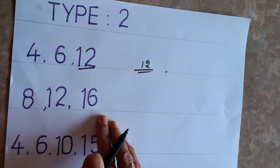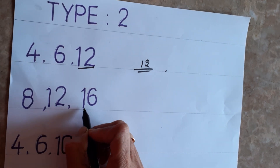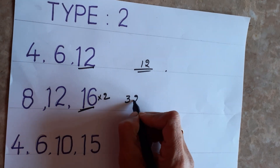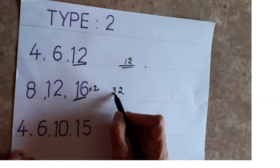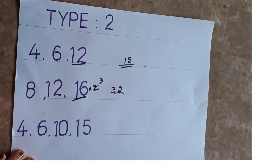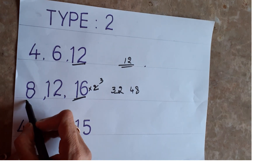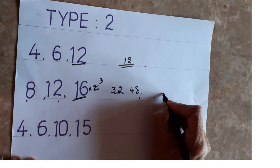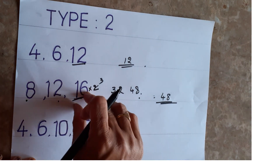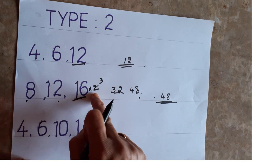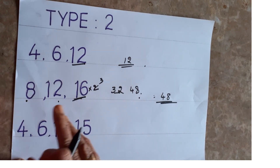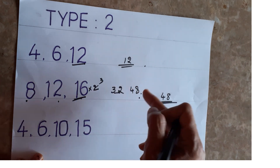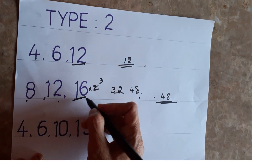When 12 does not divide into 16, take the highest number (16) and multiply it by 2: 16 × 2 = 32. Does 12 divide into 32? No. So take 16 × 3 = 48. Does 8 divide into 48? Yes. Does 12 divide into 48? Yes. Does 16 divide into 48? Yes. So the LCM is 48. The rule: take the biggest number, multiply by 2, then 3, then 4, until all given numbers divide into it.